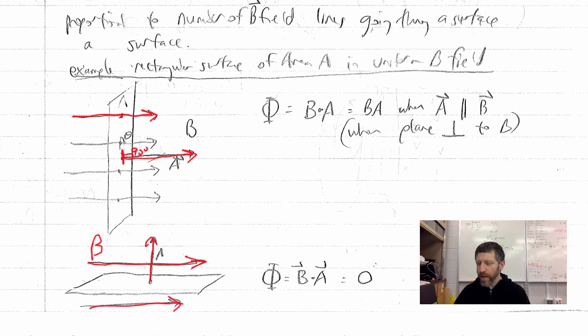So as long as you can multiply B dotted on A, or the integral of B dot dA, you've got the magnetic flux. And we're going to need that big time.